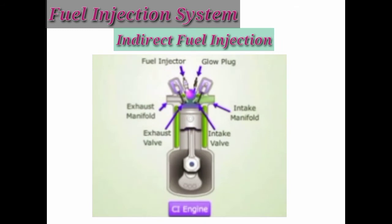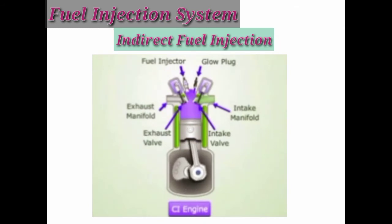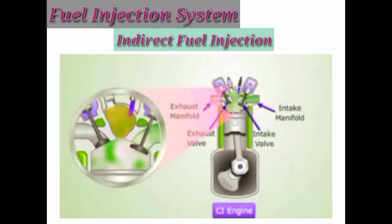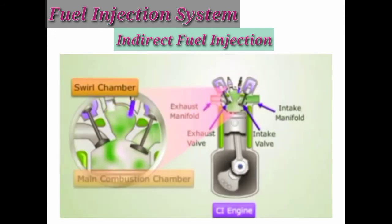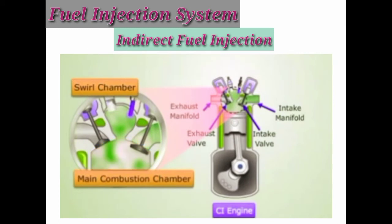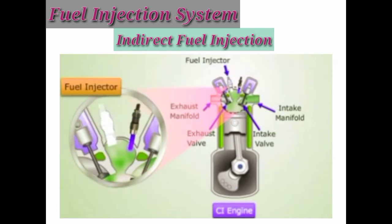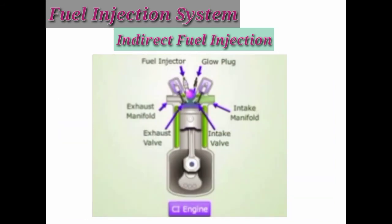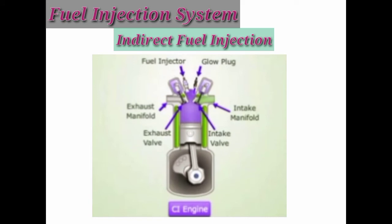In indirect fuel injection, fuel is not directly injected into the combustion chamber. A small swirl chamber or pre-chamber is installed in the cylinder head above the main combustion chamber. A glow plug and fuel injector are installed in this swirl chamber, which creates a swirling action in the compressed air. This helps in mixing diesel with air uniformly.